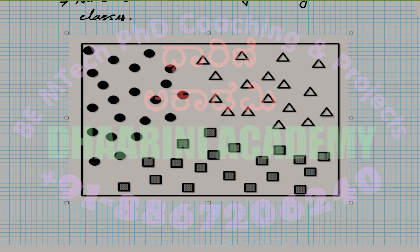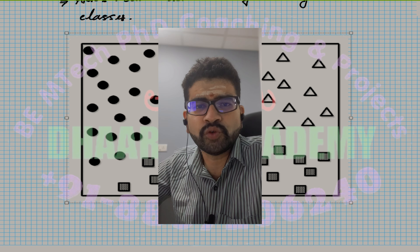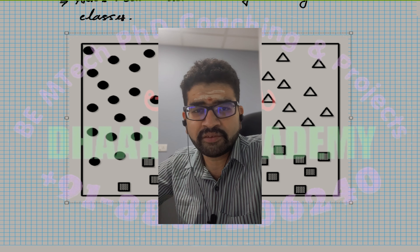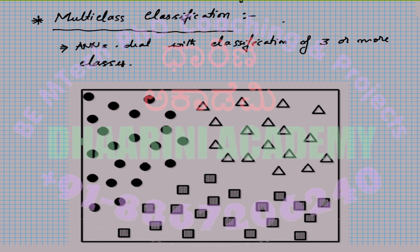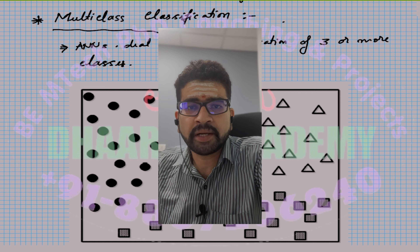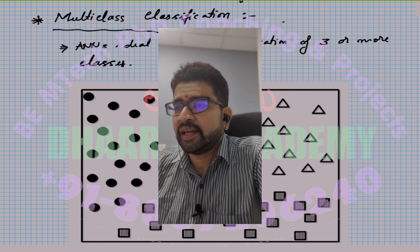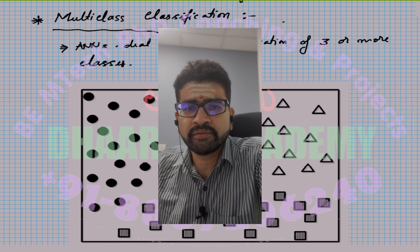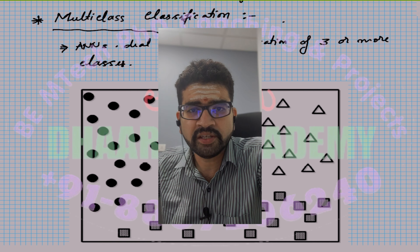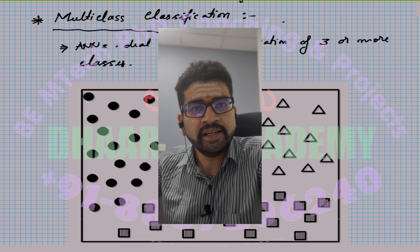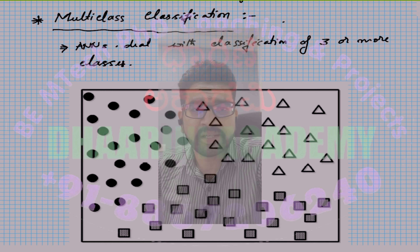How many input nodes are required? The input nodes are two, because at the input layer, we have two coordinates for the input data — x and y. Every point on this graph has two coordinate values, x and y. Whenever you have the number of classes more than or equal to three, that falls under what is called multi-class classification.